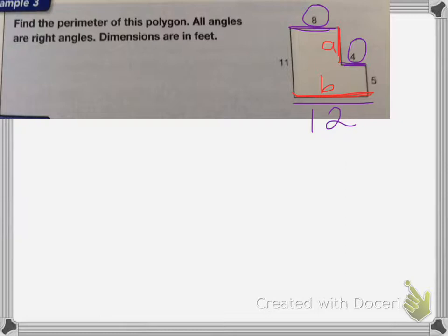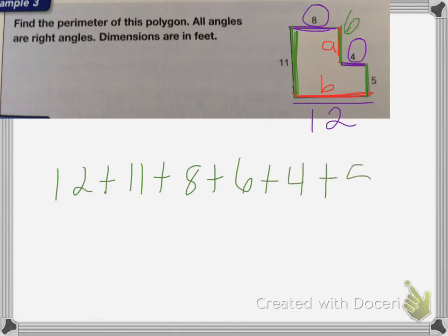Now on the other side, I have 11 here. So 11 is equal to 5 plus my missing side A. So to figure out what A is, I'm going to take 11 and subtract 5 from it. So 11 minus 5 is equal to 6. So A is equal to 6. Now I'm going to add up all of these sides together. So I have 12 plus 11 plus 8 plus 6 plus 4 plus 5. And my answer is 46 feet long.